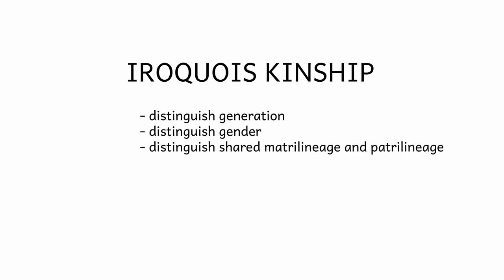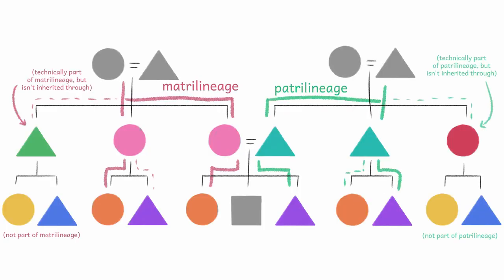So this system always distinguishes generation and gender. But instead of distinguishing based on distance, it distinguishes based on who you share matrilineages and patrilineages with. So it's common in societies that prioritize either or both of those.